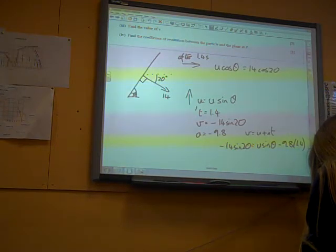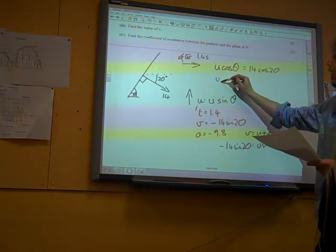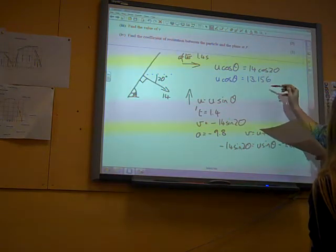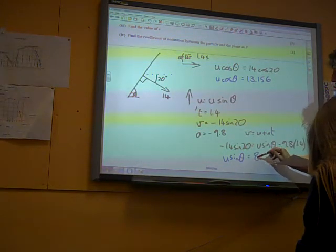The equation that I get here, v equals u plus at, I've got minus 14 sin 20 equals u sin theta minus 9.8 times 1.4. This gives me u cos theta is 13.156 and u sin theta is 8.932.